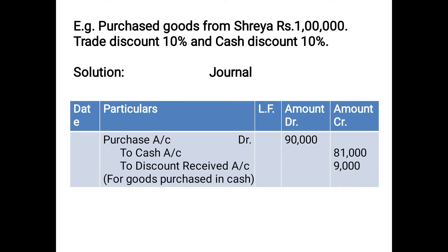Next example: goods purchased from Shreya for Rs. 1 lakh, trade discount 10%, cash discount also 10%. Both discounts are given. Since cash discount is mentioned, it is definitely a cash purchase. When both discounts apply, the rule is: first calculate the trade discount, then calculate the cash discount on the net balance after deducting trade discount.